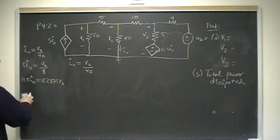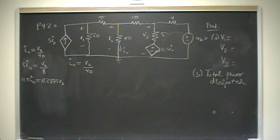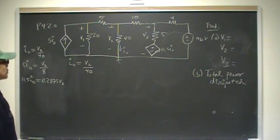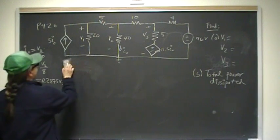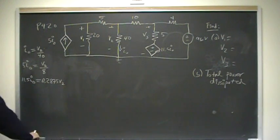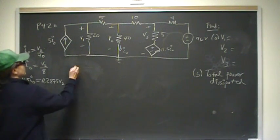That gives me 0.2875 V2. I'll just let my calculator do the hard work. Now that we have everything in terms of V1, V2, and V3, we can go ahead and simply do node voltage equations.